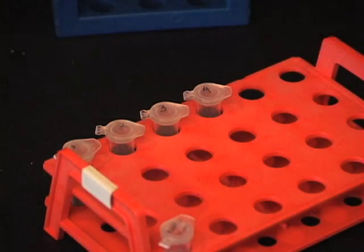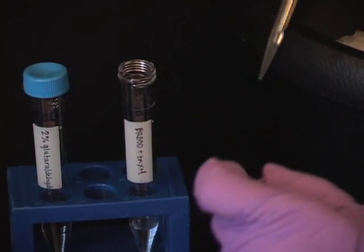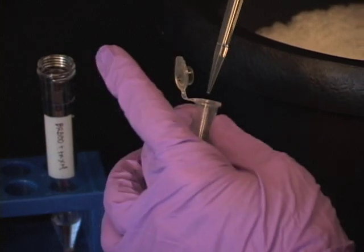As you add each of the following components, flick to mix or gently invert the tube. First, add BRB80 containing 10 mM taxol to each tube.